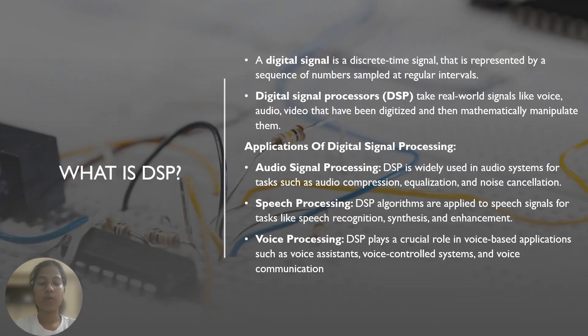Let us start by knowing what a signal is. A signal is a function of one or more variables that carries or transfers information. There are two types of signals, one is analog signal and the other is digital signal. Analog signal is continuous in both time as well as amplitude. Whereas, a digital signal is a discrete type signal that is represented by a sequence of numbers that is sampled at regular intervals.